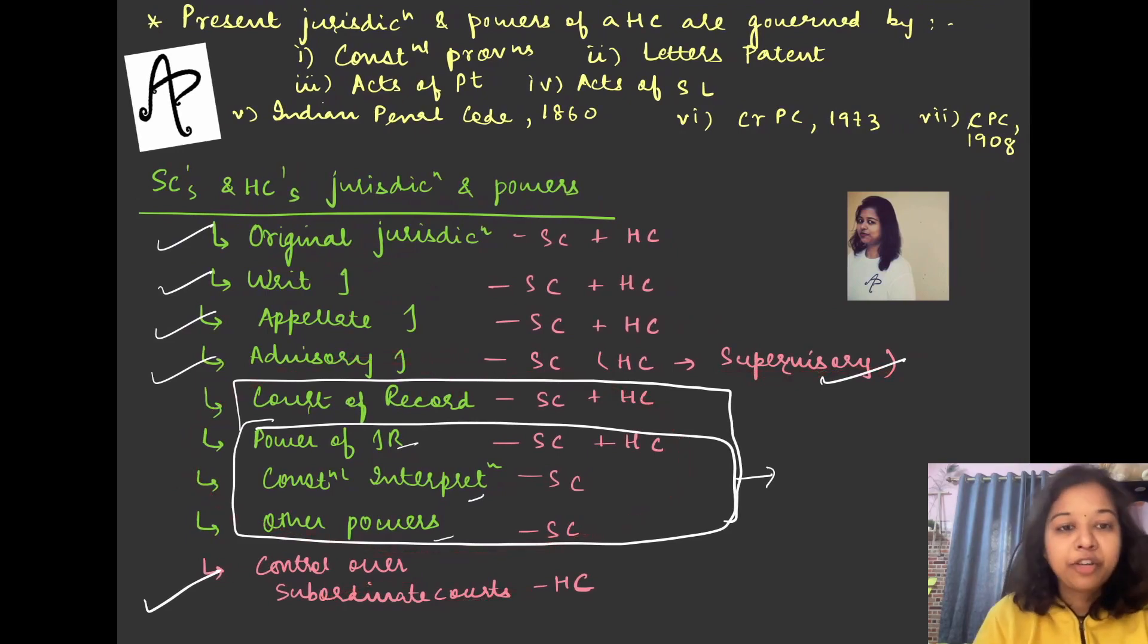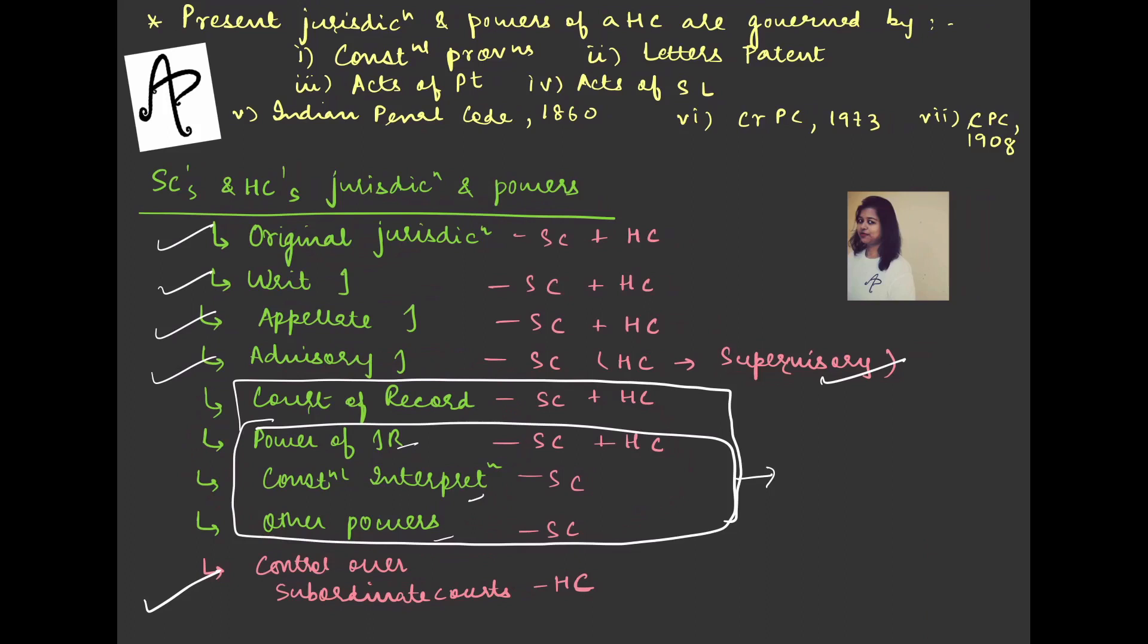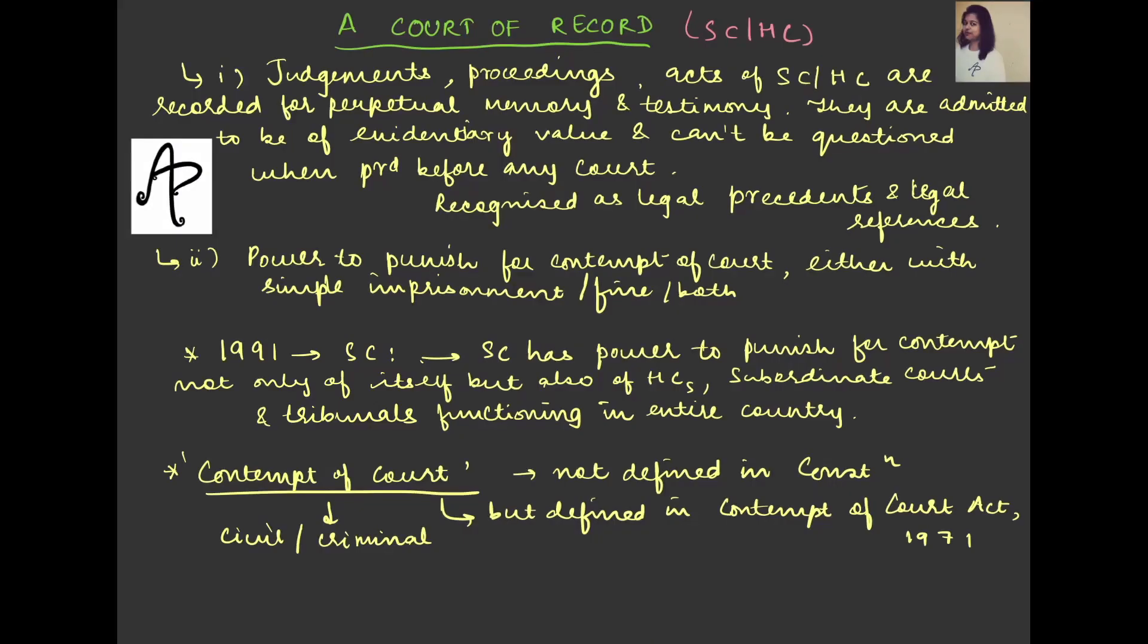Now what we have to see are four other things: Court of Record, Power of Judicial Review, Constitutional Interpretations, and the other powers. This is a miscellaneous kind we can just see. If you haven't seen previous videos, I would recommend that please do, so then you have to understand the whole story or larger picture.